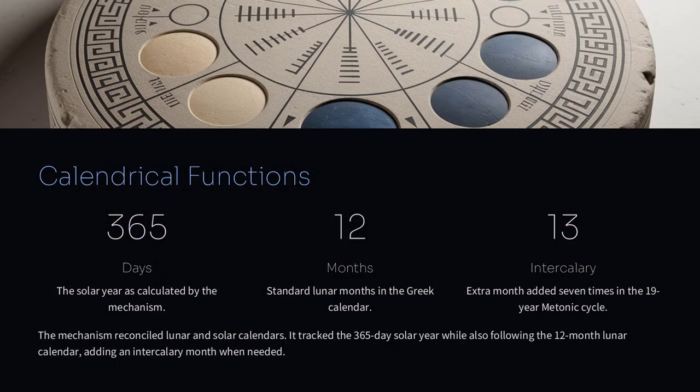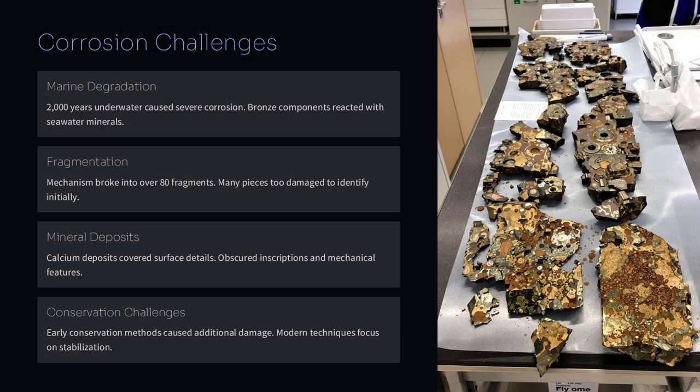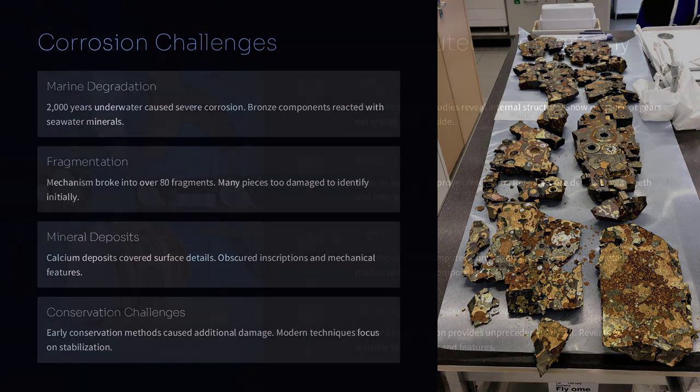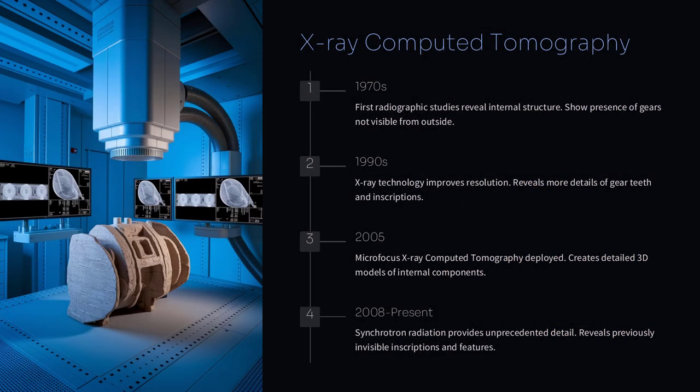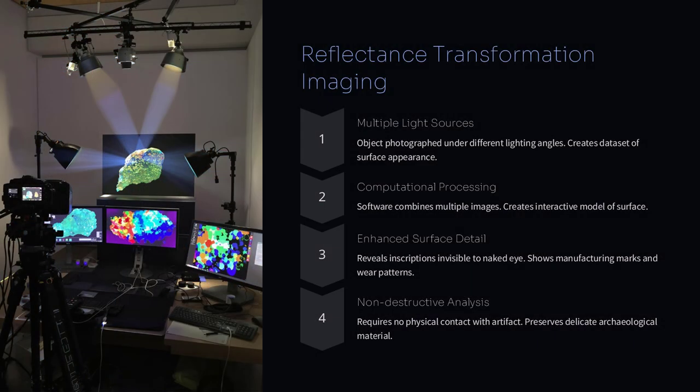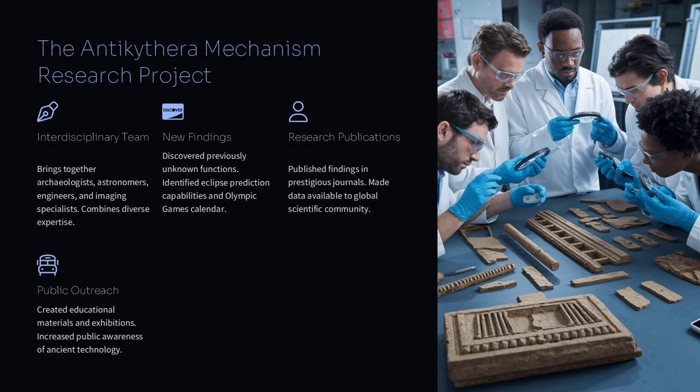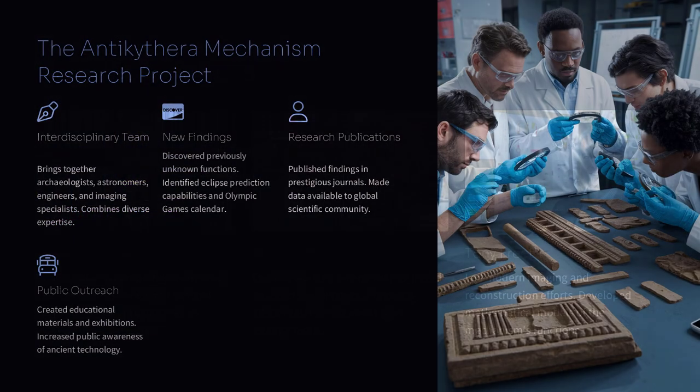Some questions often come up about this device. One common question is, how could people so long ago build something so advanced? The answer is that ancient cultures often had deep knowledge of mathematics in the natural world. They passed this knowledge down through generations, sometimes in ways that we are still trying to understand today.